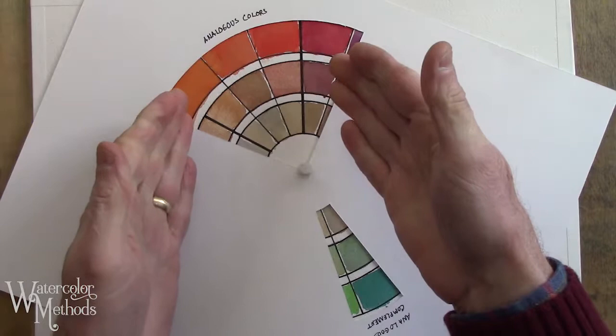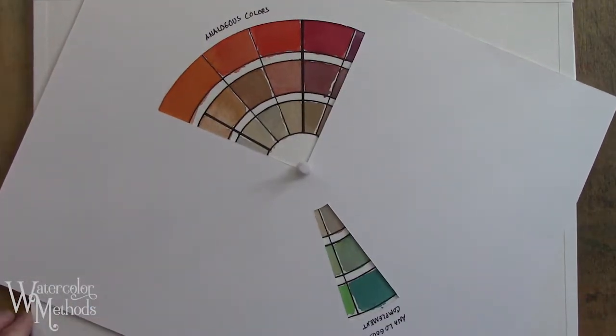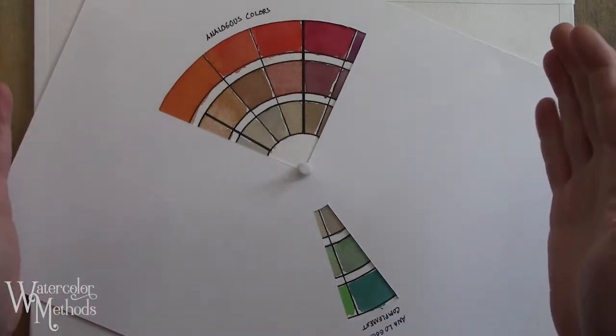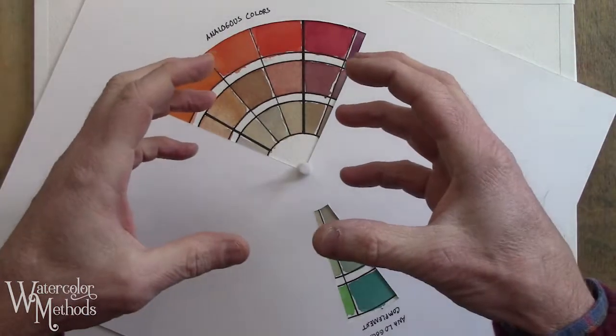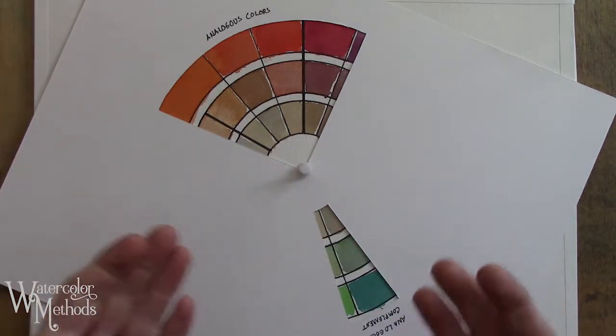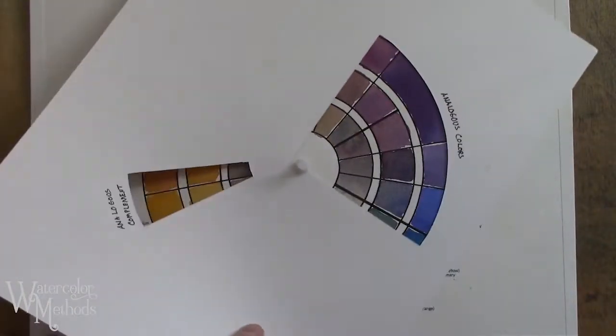You can use these analogous color schemes in your painting, and when you do, you'll get a great deal of color harmony. The painting will hold together very well with that limited number of colors. It's also going to, depending on the colors—whether they're warm colors like this or cooler colors like that—create a very particular mood.